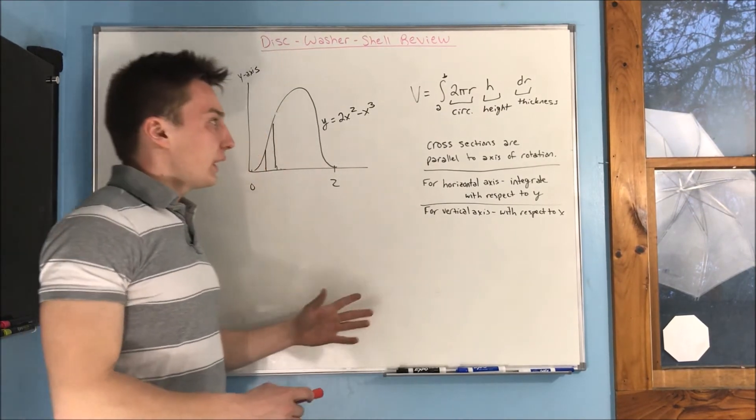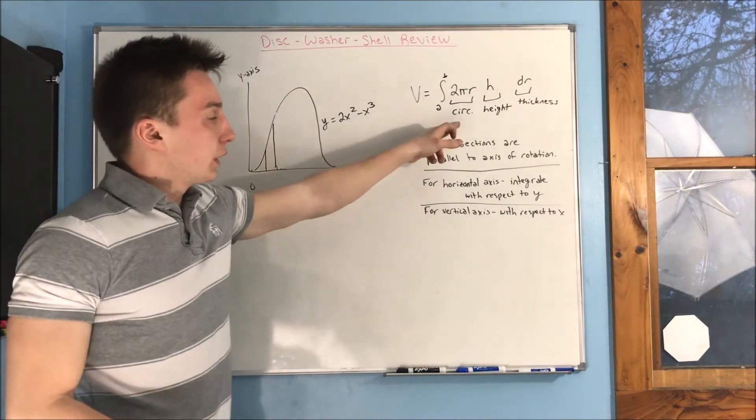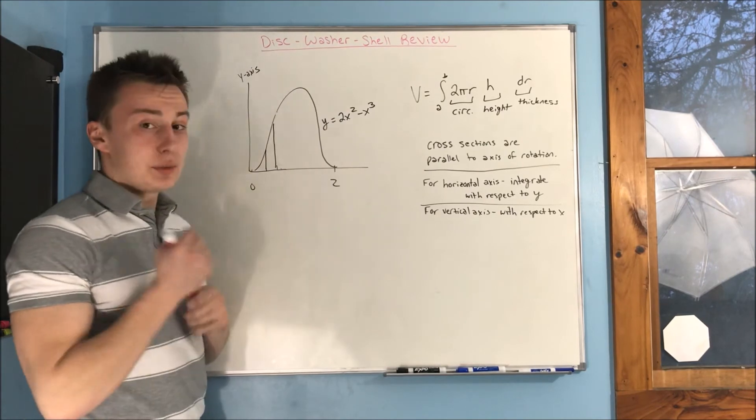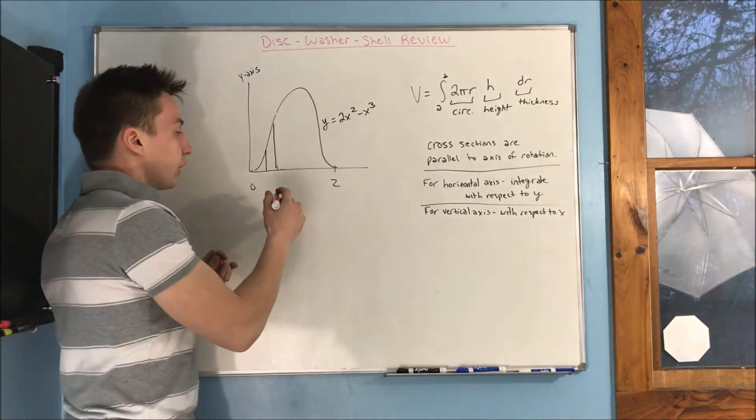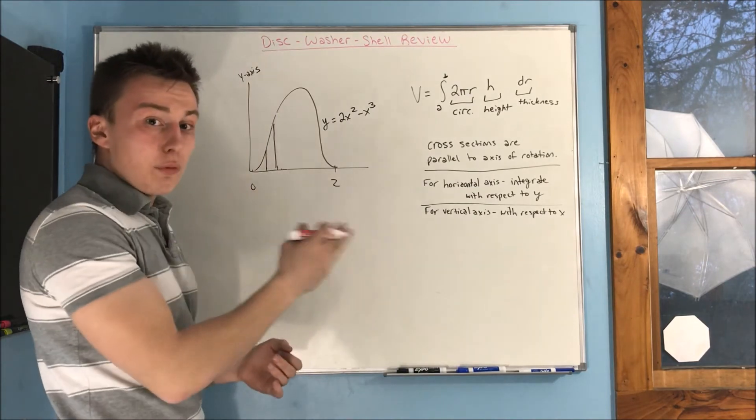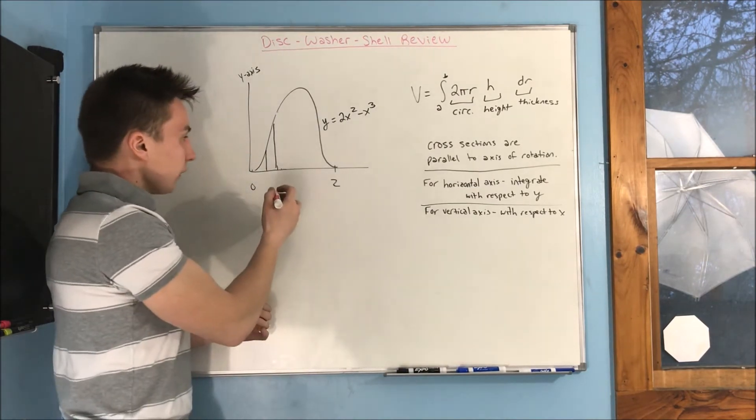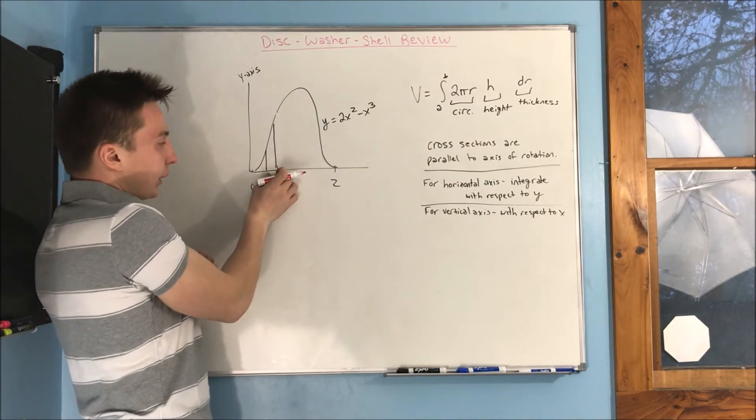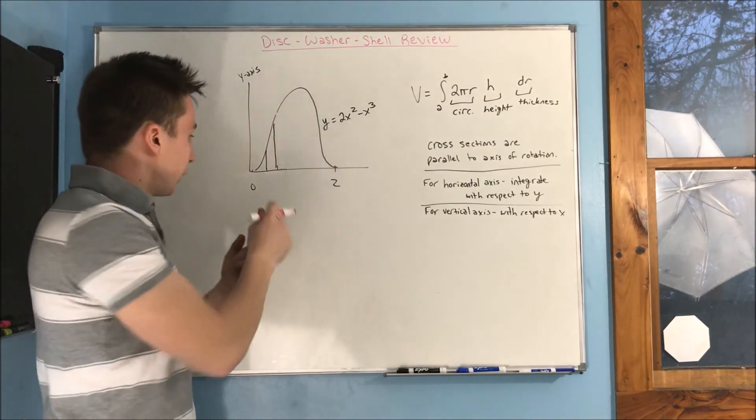So, last thing, if you didn't understand the radius and the height, those are the two hardest parts of shell method, and I'm just going to explain that really quick. So, if you think about this region that I was talking about before revolved around the y-axis, it's going to have a radius, and of course, this region is going to be infinitesimally small.